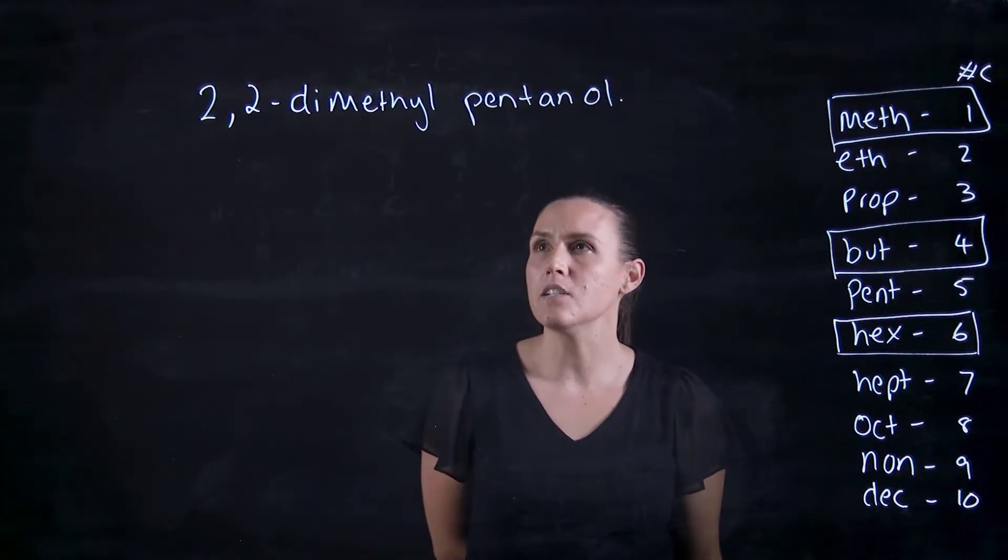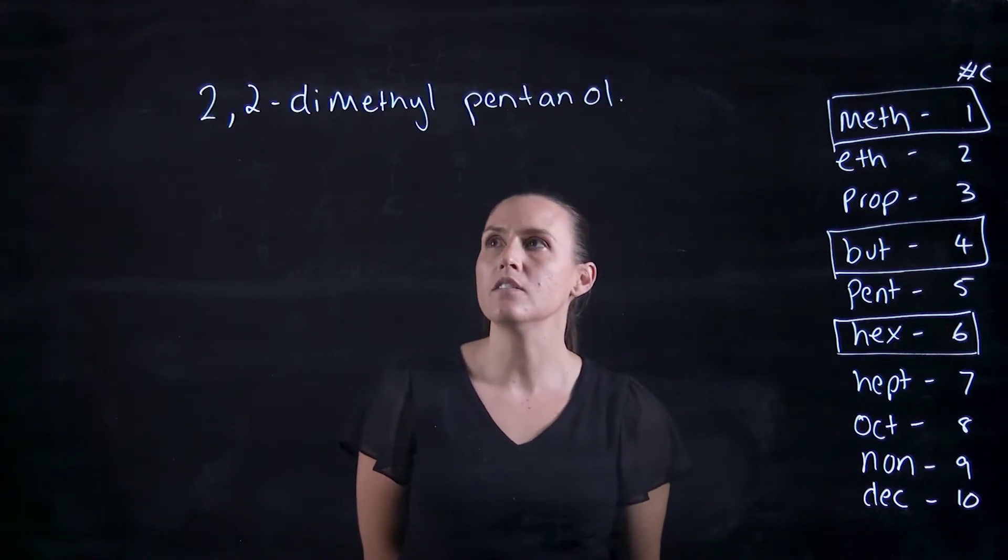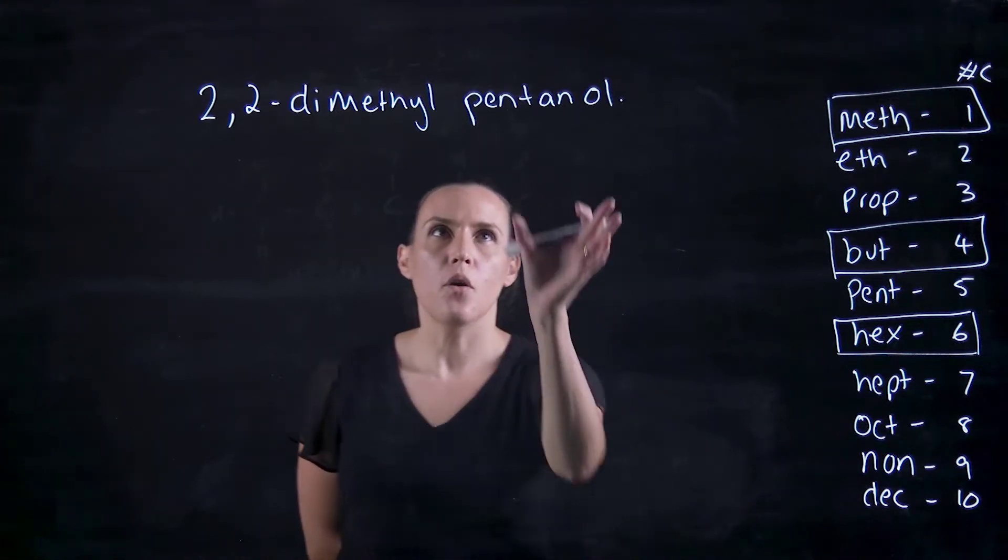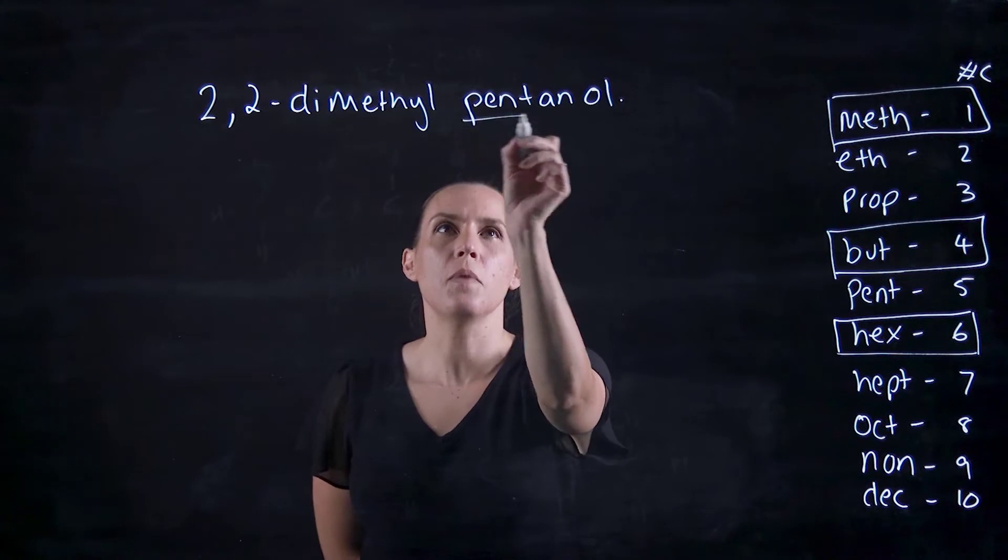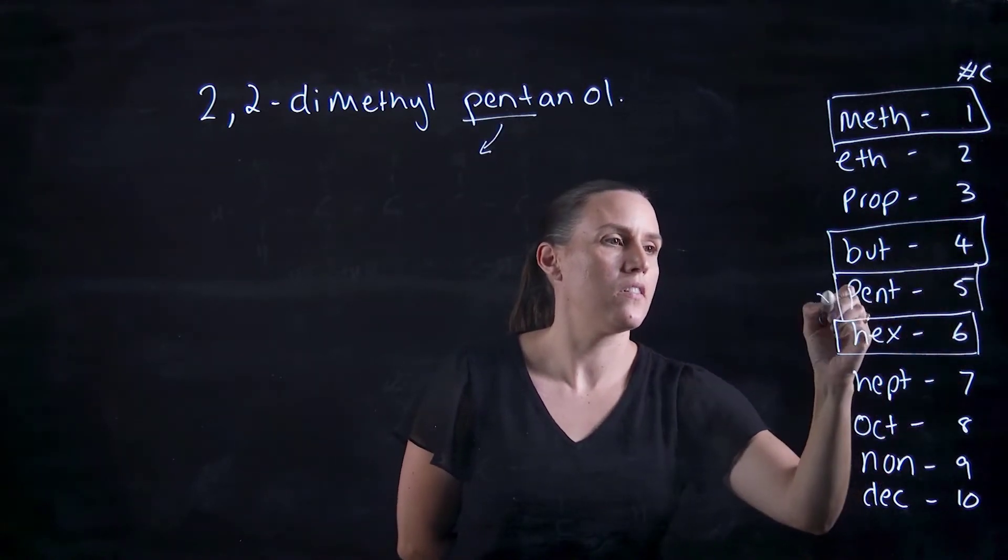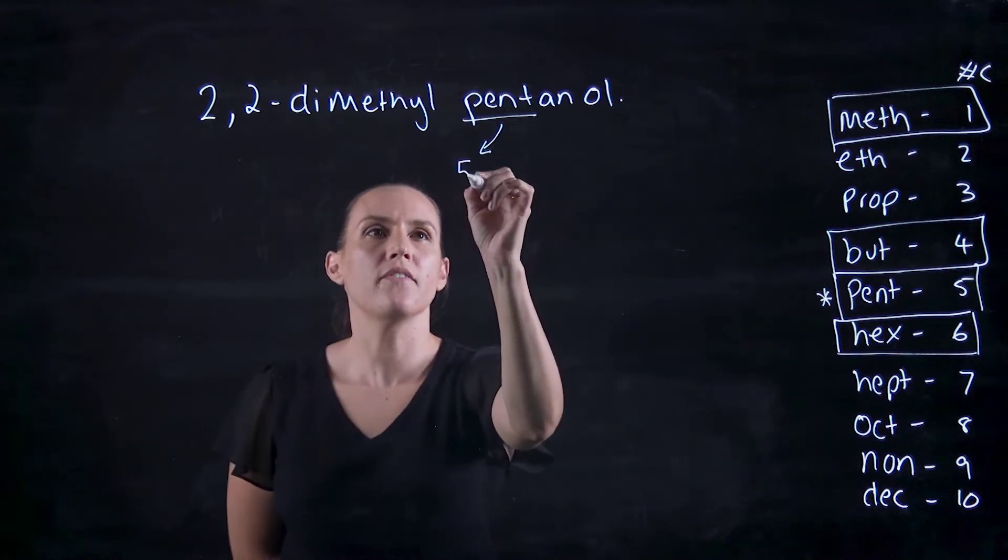So this example that we have chosen for alcohol is 2,2-dimethylpentanol. Now pulling out this back bit here, pent is five. So we've got five carbons.